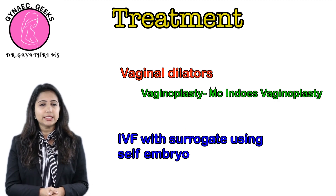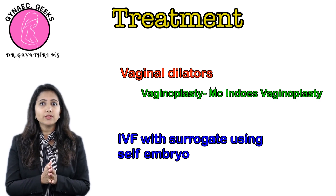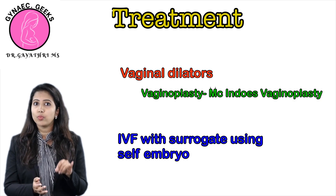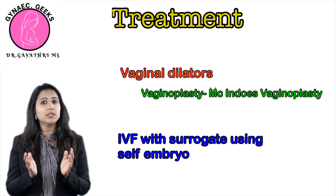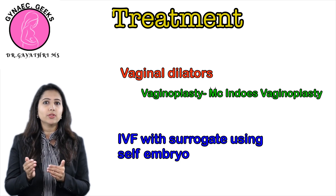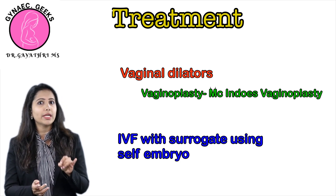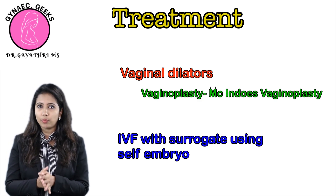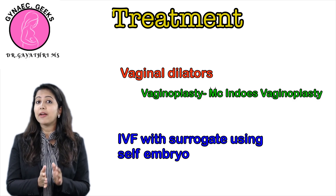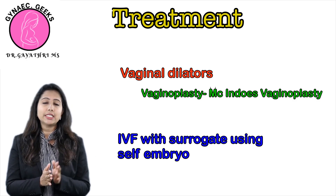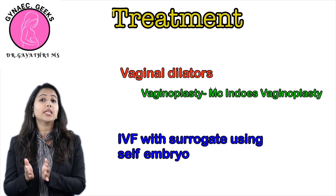The treatment includes any procedure to increase the length of the vagina. Either we can use vaginal dilators or we can do surgery — this includes vaginoplasty, the common one being McIndoe's vaginoplasty. As the patient has infertility, we can go for IVF through a surrogate woman.